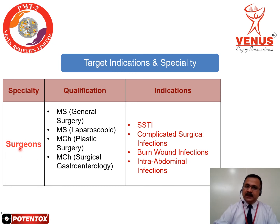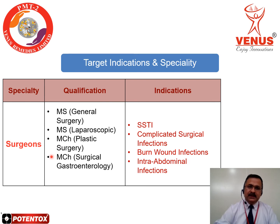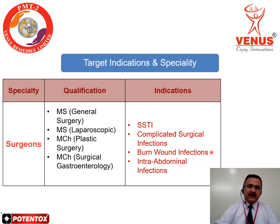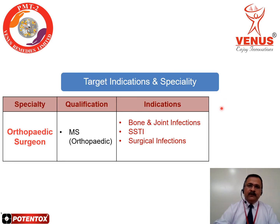The second specialty is the surgeon category. Doctors here include MS general surgeon, MS laparoscopic surgeon, MCh plastic surgeon, and MCh surgical gastroenterology. The target indications include skin and soft tissue infection (SSTI), complicated surgical infections, burn wound infection — specifically covered by plastic surgeons — and intra-abdominal infection, which is managed by MCh surgical gastroenterology and general surgeons.